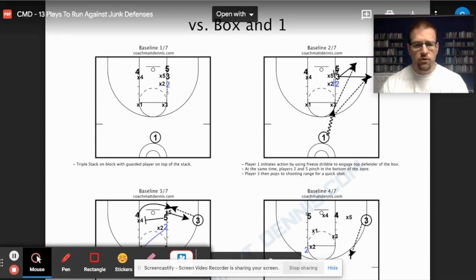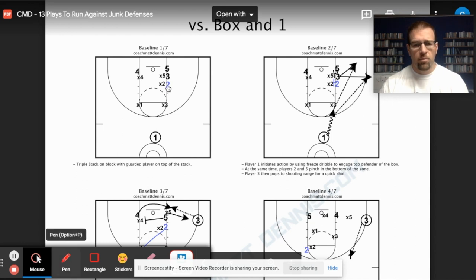So what we have in this first one here is we got player two lining up with three players right in a row, five, three, and two. What we're going to do is we're going to set a screen with the player getting the box and one as well as our post player. So X5 and X2 are going to get screened. Three is going to pop out.